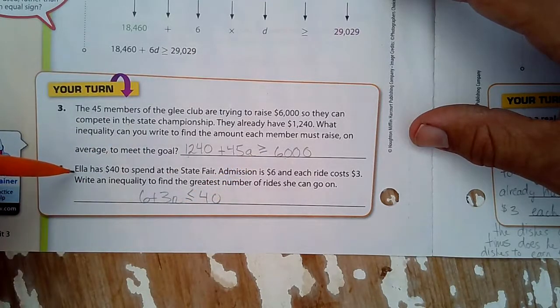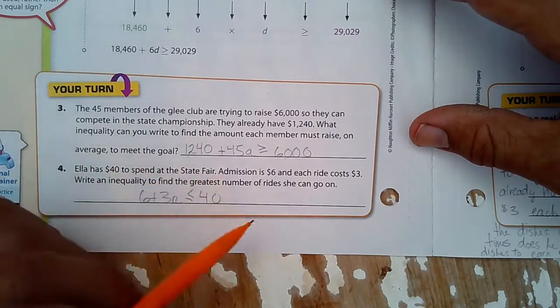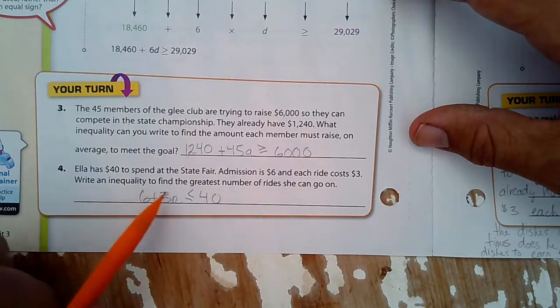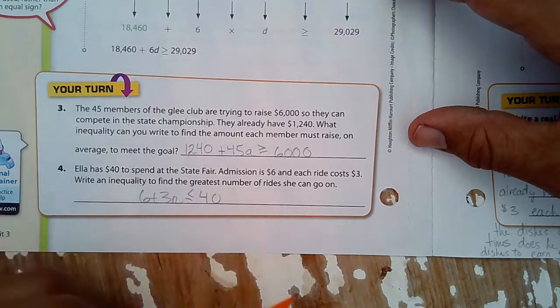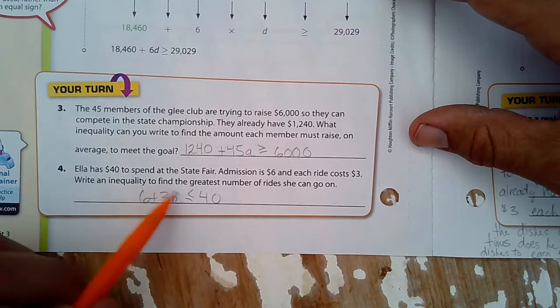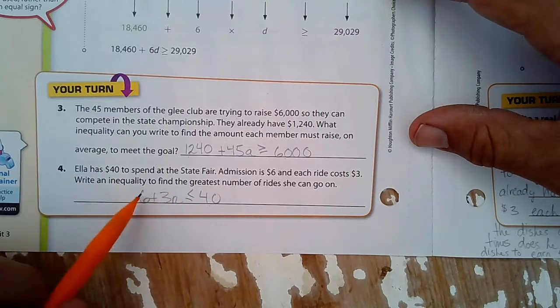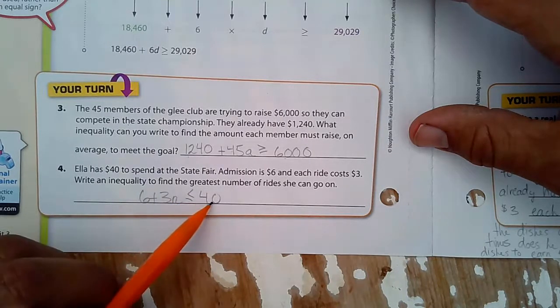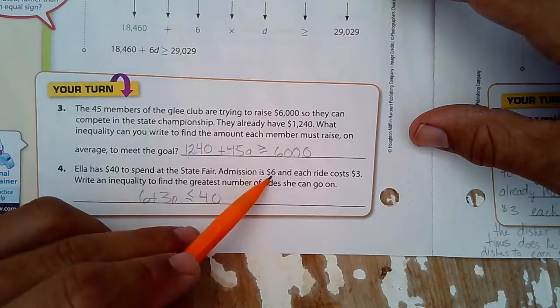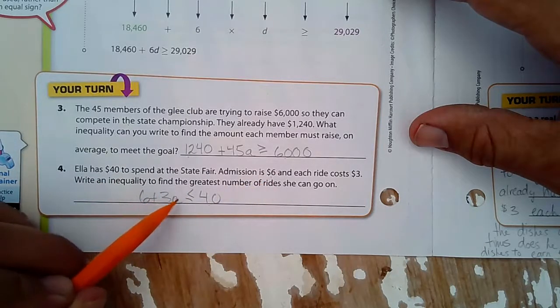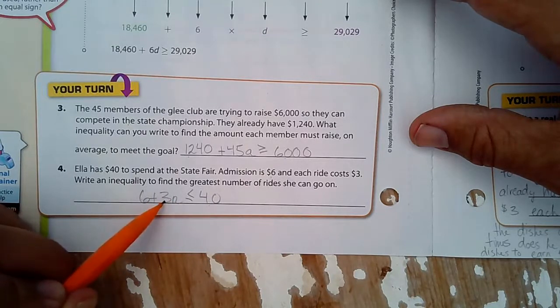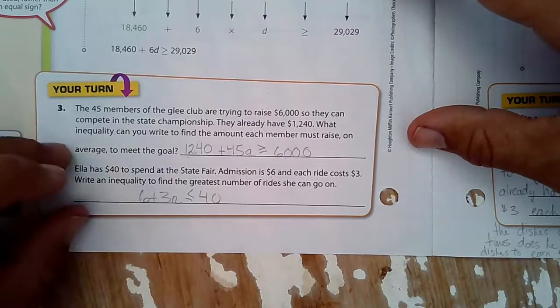On the next one, Ella has $40 to spend at the state fair. Admission is $6, and each ride costs $3. Write an inequality to find the greatest number of rides she can go on. Okay, we have our $40 here. This side is what she spends. So that has to be less than, or it could be equal to, how much money she has. So $6, and then plus $3 for each ride. So there you go. There it tells you your rate right there. And there's our inequality.